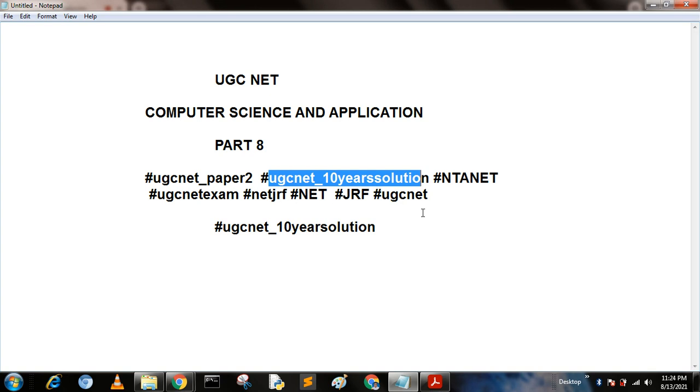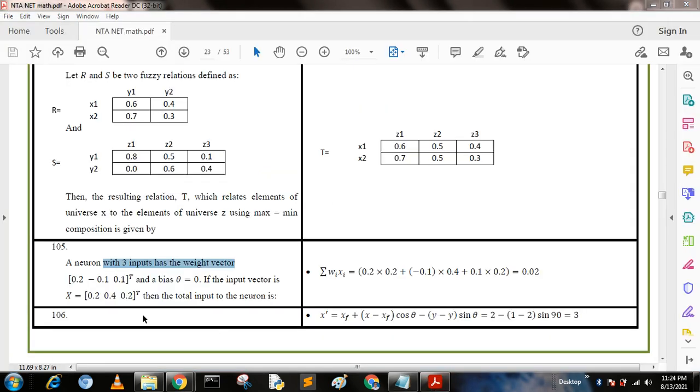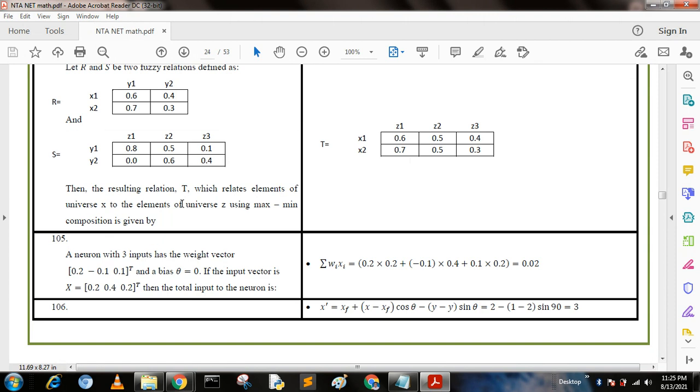Now I will describe the remaining portions. Question 105: A neuron with three inputs has the weight vector [0.2, -0.1, 0.1] transpose and the bias theta equal to 0. If the input vector is x = [0.2, 0.4, 0.2], then the total input of the neuron is calculated by cross multiplying both matrices. The summation of wi into xi equals 0.2 times 0.2 plus minus 0.1 times 0.4 plus 0.1 times 0.2, and we get the answer 0.02.